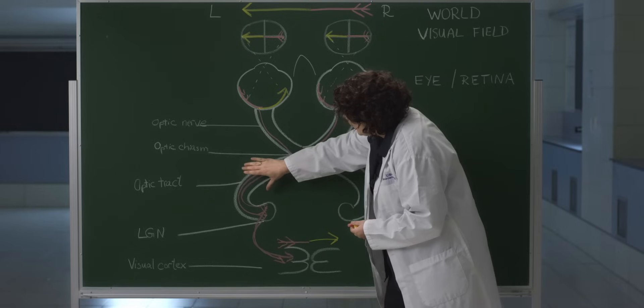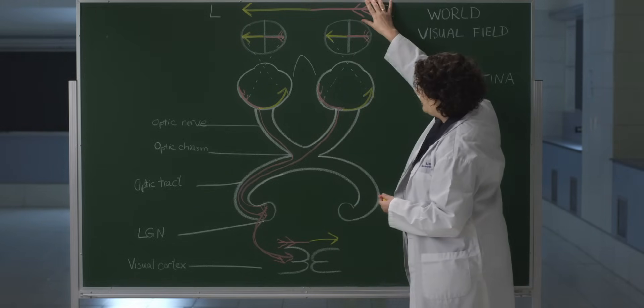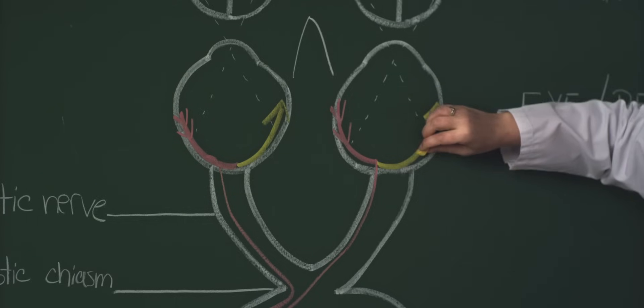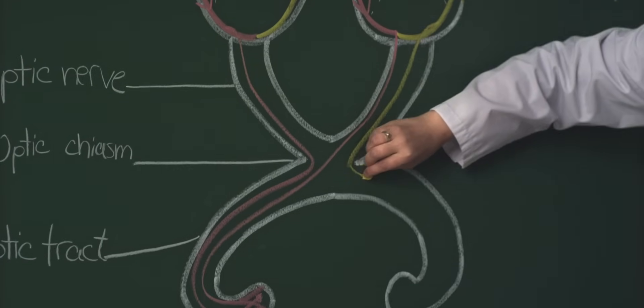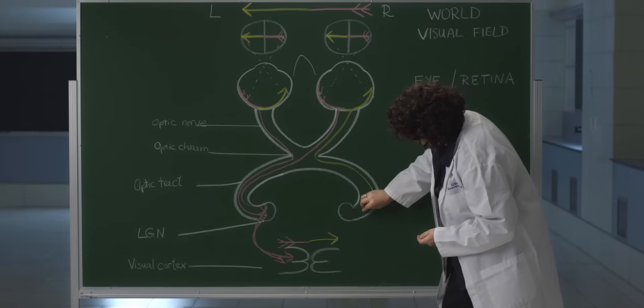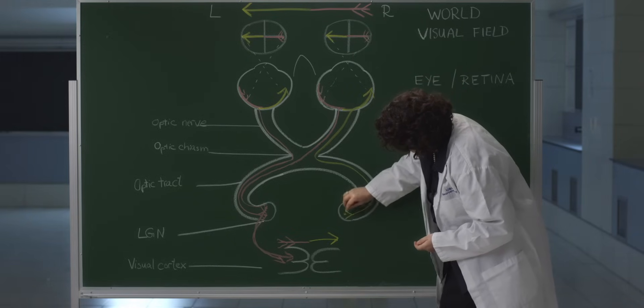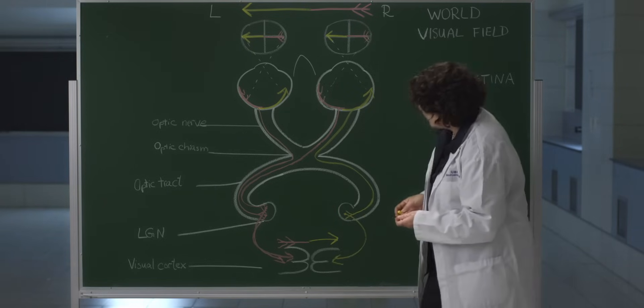As you can see in the optic tract, the fibers have been lateralized to represent the opposite visual field. Now let's do the same thing for the other side of the visual field. First, let's take these temporal retinal fibers down the optic nerve and down the ipsilateral optic tract — the optic tract on the same side. They're going to synapse in the lateral geniculate nucleus, and from there travel to the primary visual cortex.